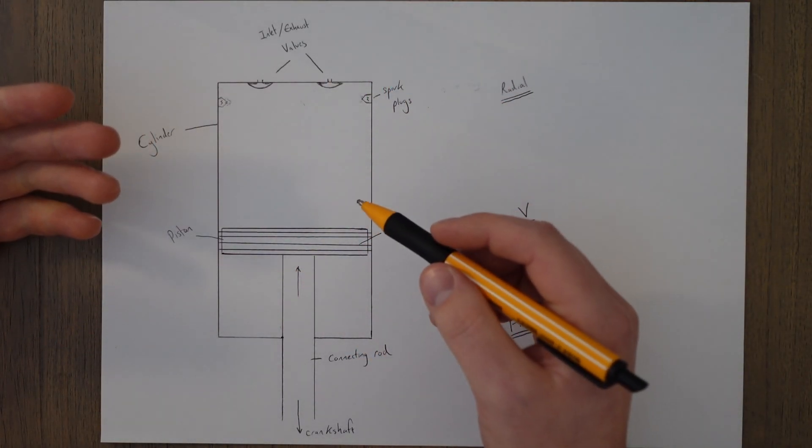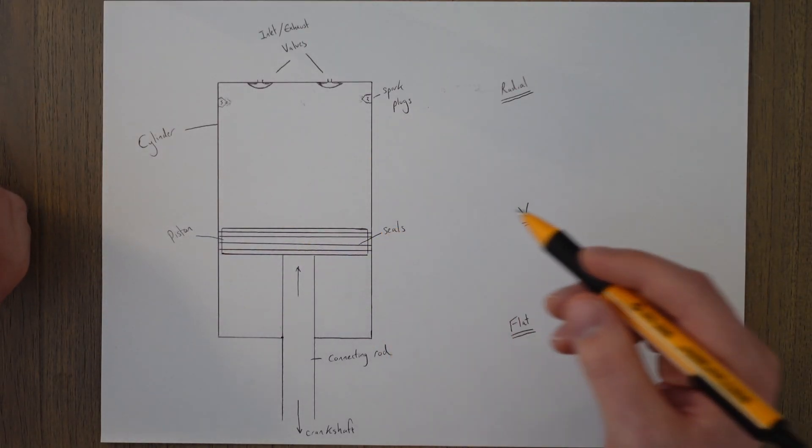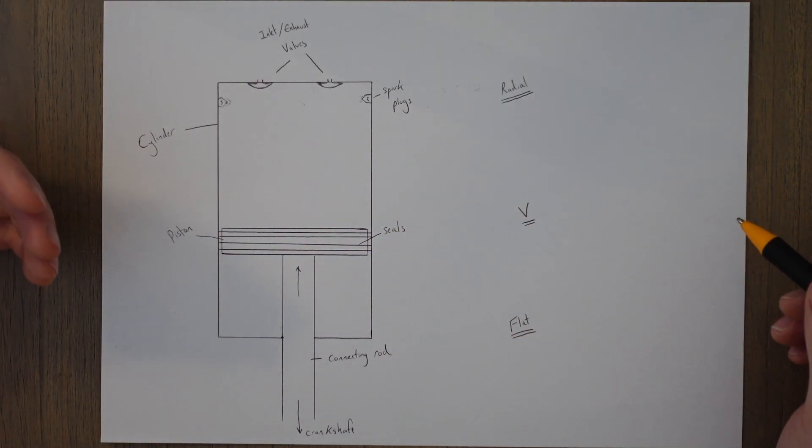Other ways of classifying an engine is by the arrangement of the cylinders. There's a few ways to lay out the cylinders.